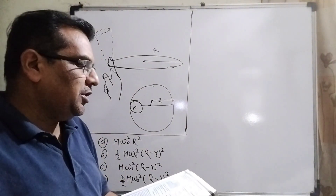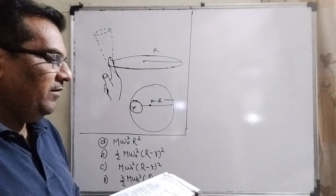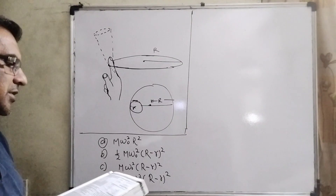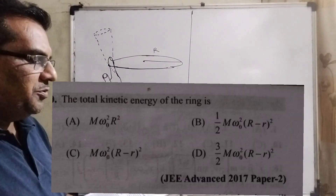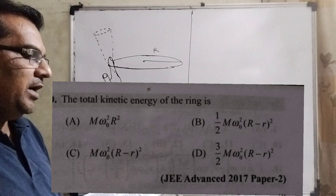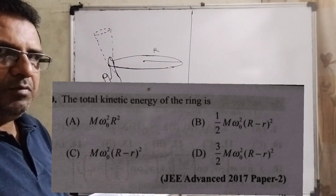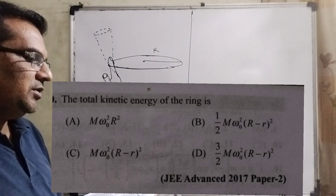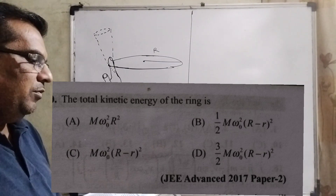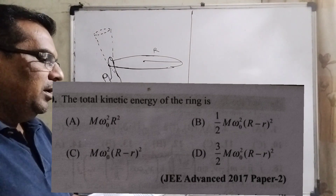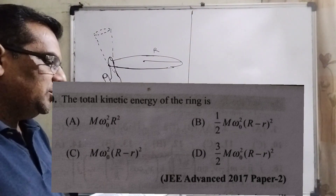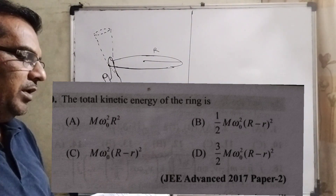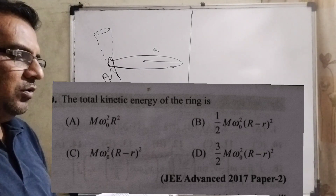The first question based on this paragraph asks: what is the total kinetic energy of the ring? The four options are: (A) Mω₀²R², (B) ½Mω₀²(R−r)², (C) Mω₀²(R−r)², and (D) (3/2)Mω₀²(R−r)².